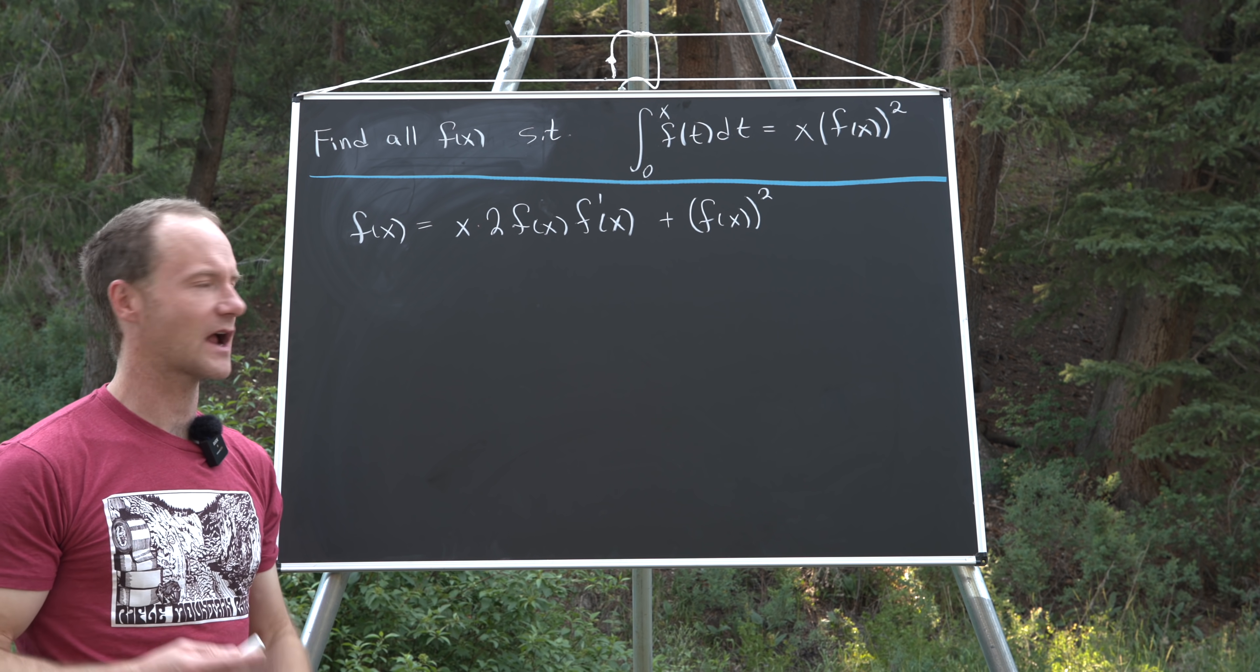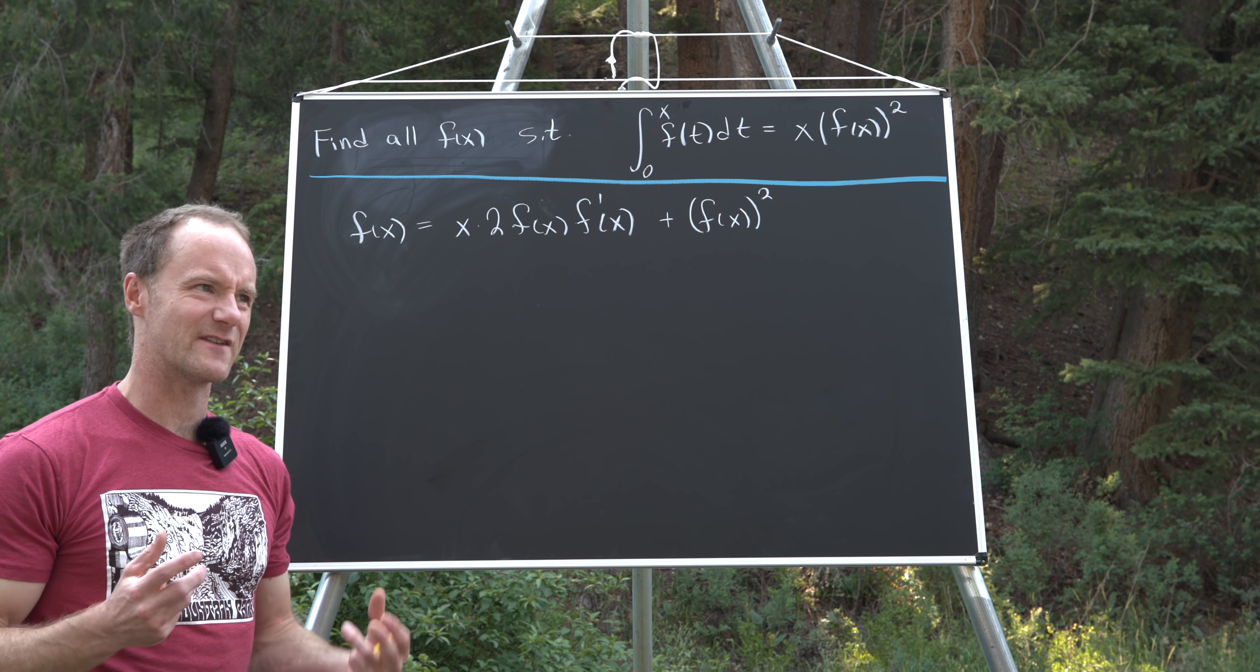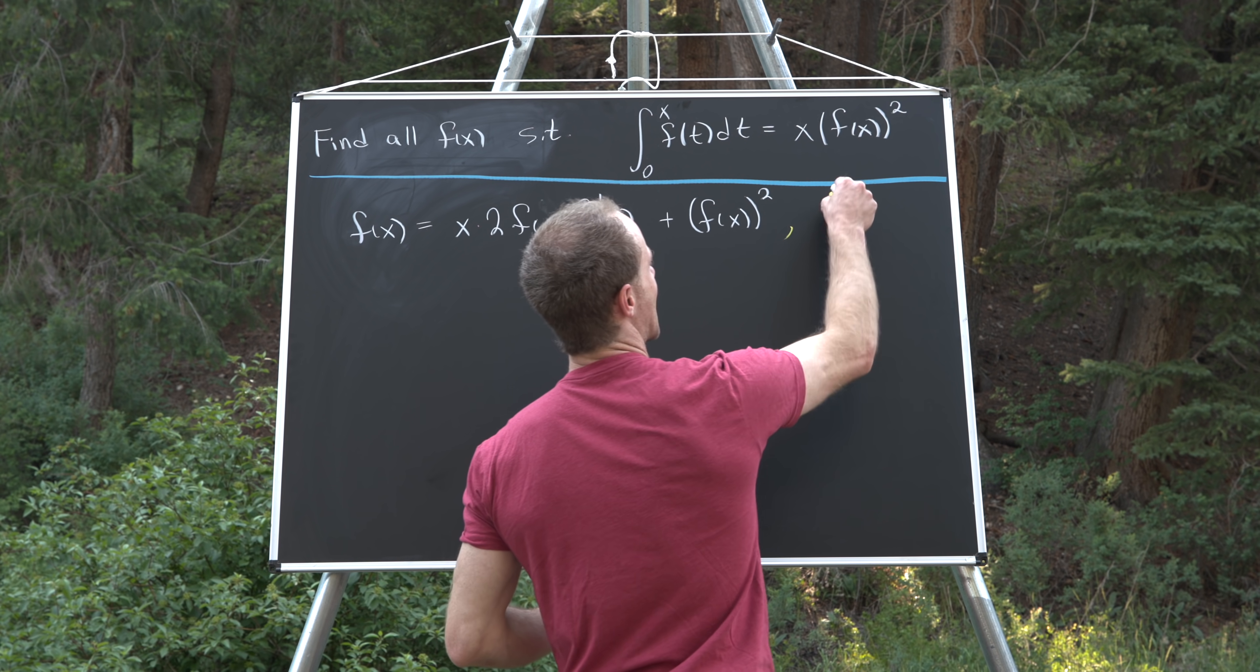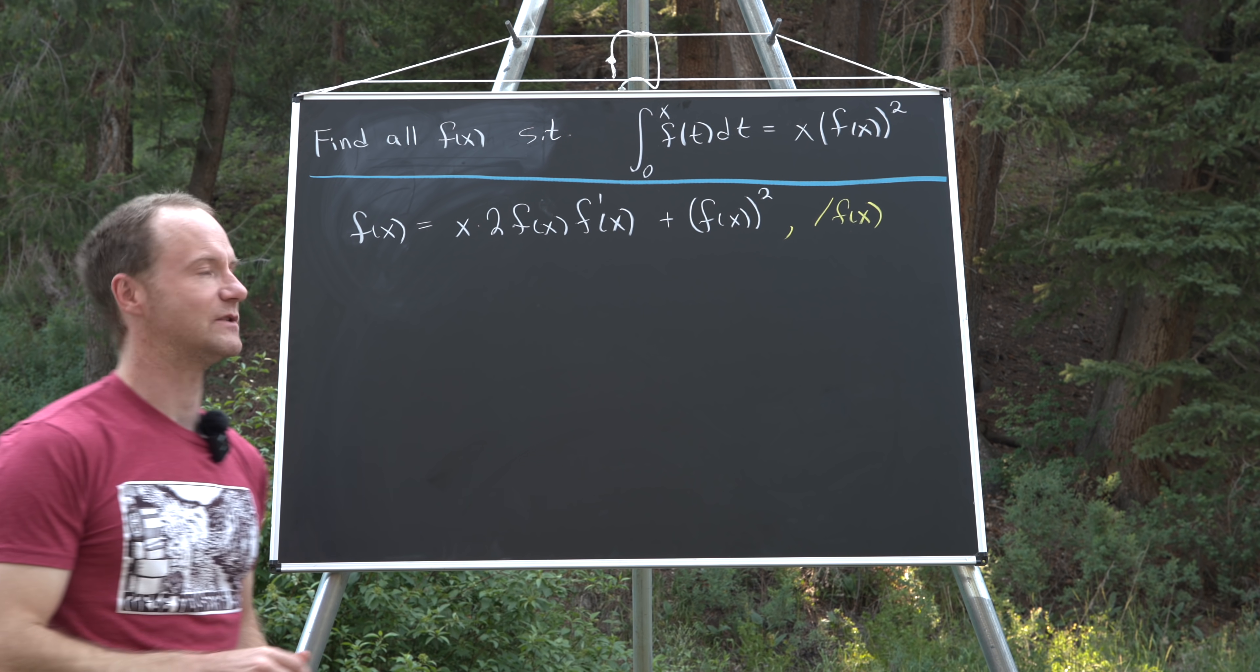But we're not going to worry about that so much. We're just going to play it fast and loose and see what we get at the end. So let's take this entire equation and divide by f of x and see what we get.